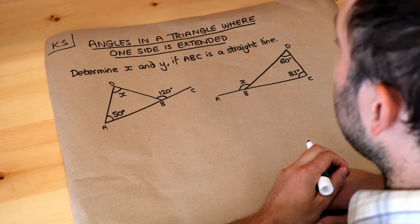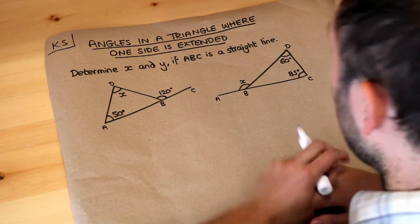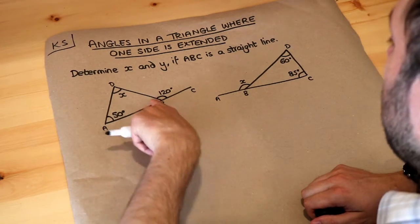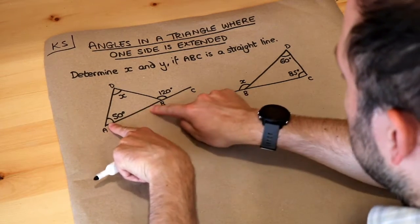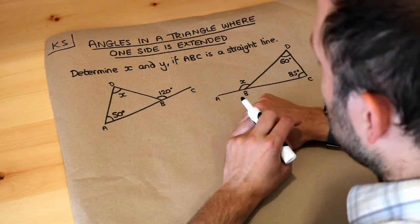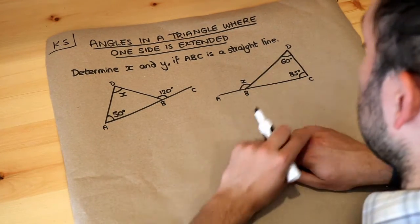Hello and welcome to this Dr Ross Maths key skill video on angles in a triangle where one side is extended. In both these diagrams we've got a triangle and then this side of the triangle AB is extended so that the line juts out of the triangle. ABC we're told is a straight line.